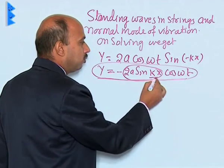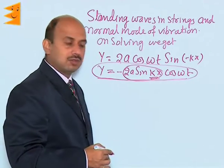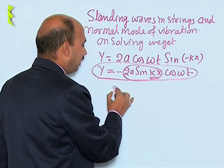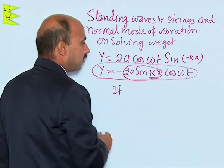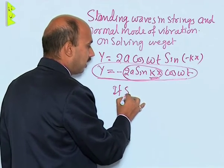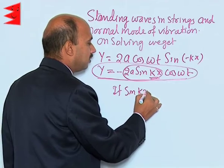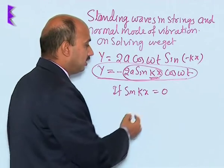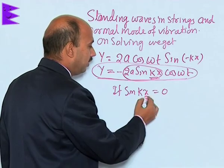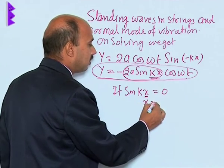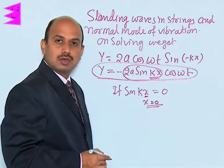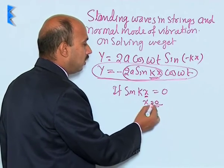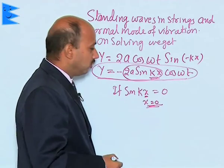If sin(kx) is equal to 0, this is only possible if x is equal to 0. So at the rigid support, if x is equal to 0, sin(kx) is equal to 0.